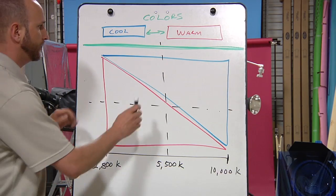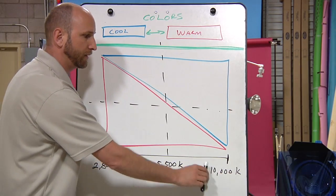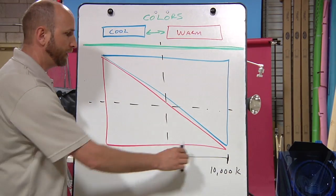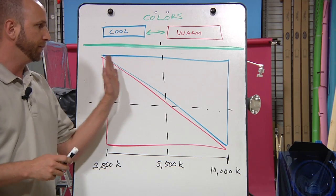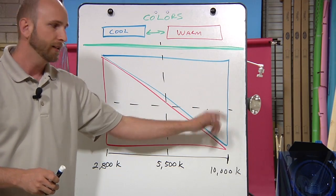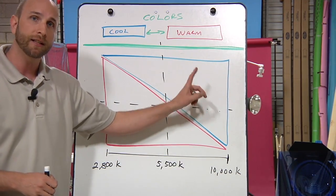Color temperature, hot colors or hot lights are blue, and cooler lights are orange. So a candle burns at a really low temperature and is orange. And a blue sky in the middle of the day is about 10,000 degrees Kelvin, and that's blue.